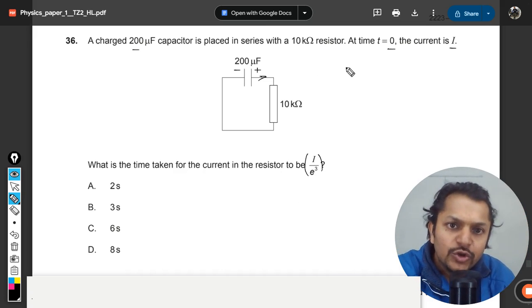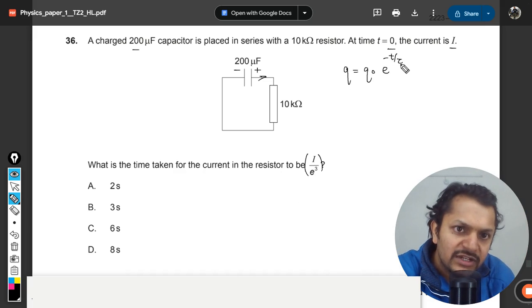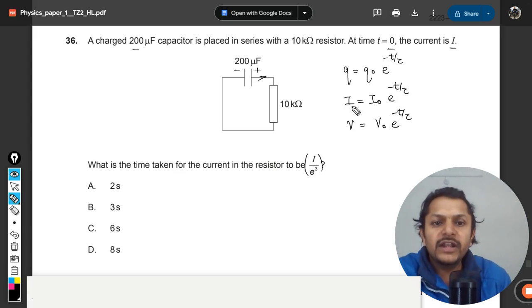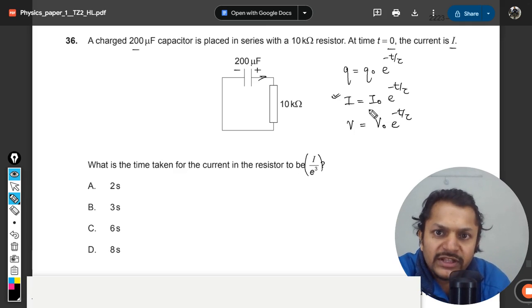In this case, we know that q is given by q₀e^(-t/τ). Current is also given by the same thing, i = i₀e^(-t/τ), and the voltage across the capacitor also has the same variation. But now we want to talk about the current, so we would be using this equation.